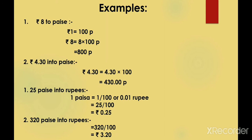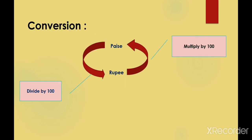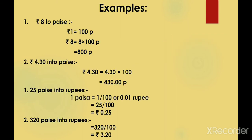Now let's see how to convert paise into rupees. For paise into rupees, you divide by 100. So 1 paise equals 1/100 rupees, or 0.01 rupees. Therefore, 25 paise equals 25 divided by 100, which is 0.25 rupees. Next example: 320 paise divided by 100 gives rupees 3.20.